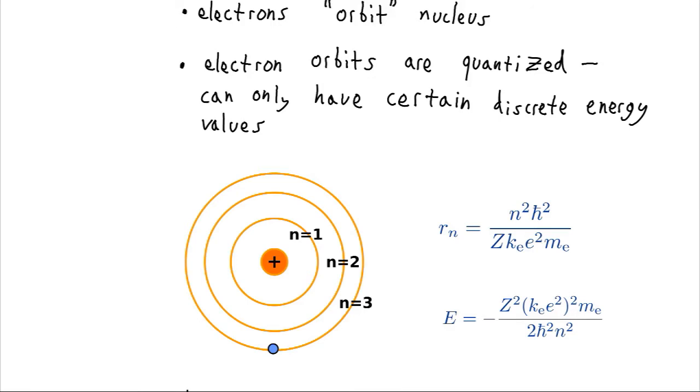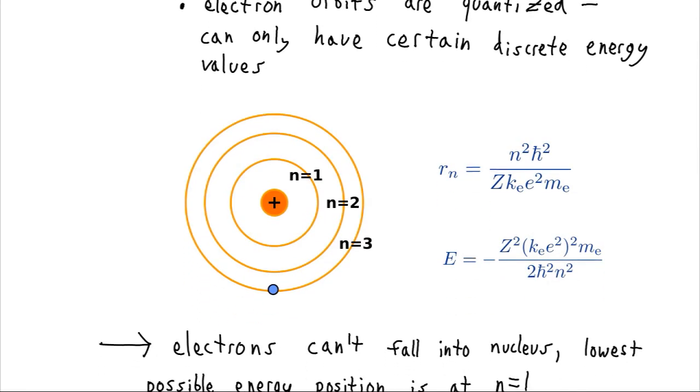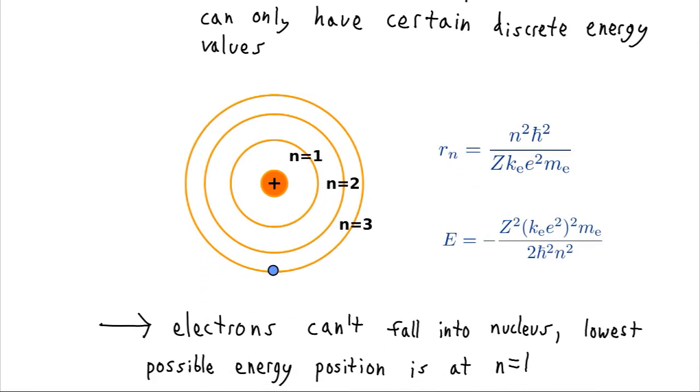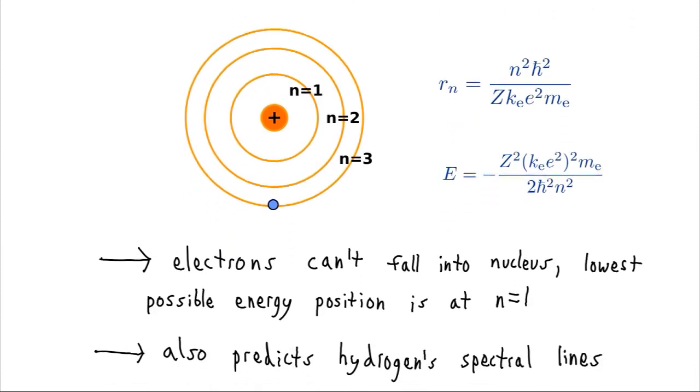And so now the reason the electrons can't fall in the nucleus is because the minimum possible configuration they can have is N equals one. They can't penetrate into this region down here by the nucleus.